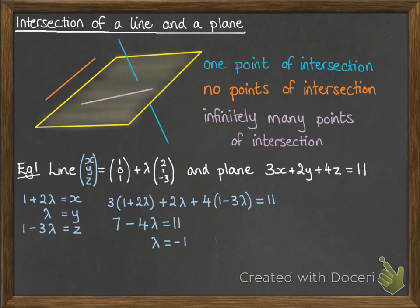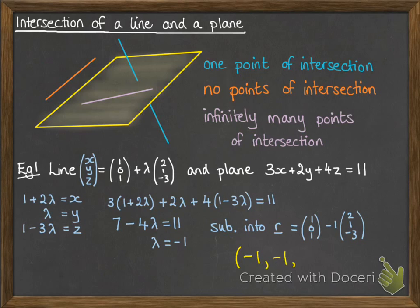Continuing with solving that equation, we get lambda to be minus 1. Once we've got that, we can substitute it into our equation for the line, and then it gives us the coordinates of the point where the line intersects with the plane.